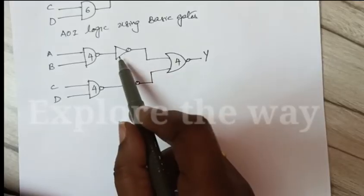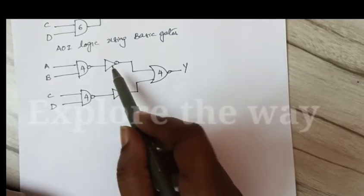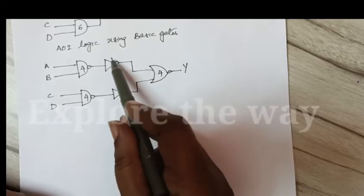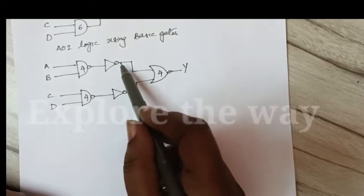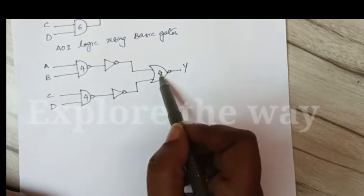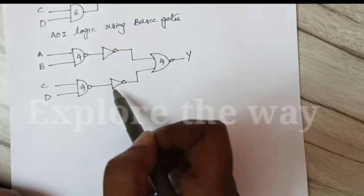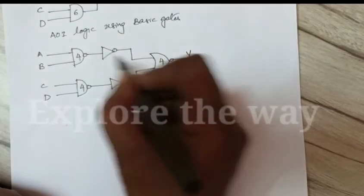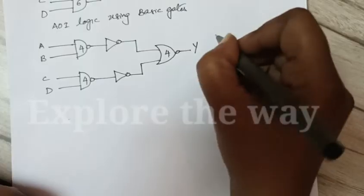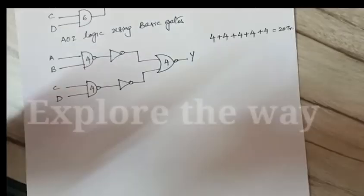So here we are using inverter. Actually inverter is not a universal logic gate. So we can implement this inverter using either NAND gate or NOR gate. These two again require 4, 4 transistors. Totally 20 transistors are required.